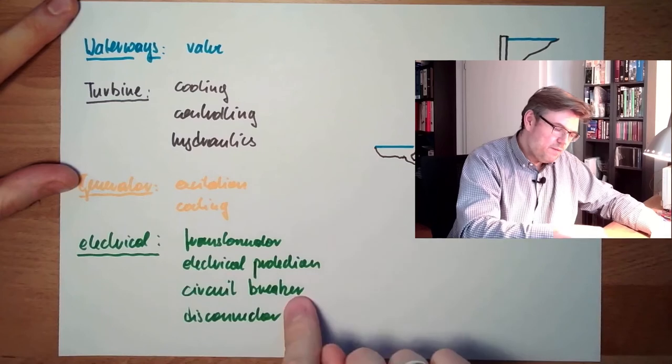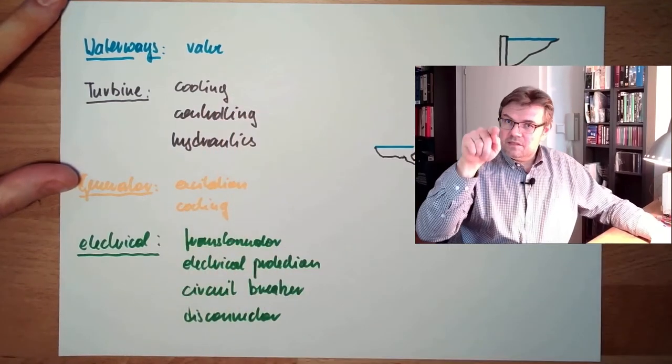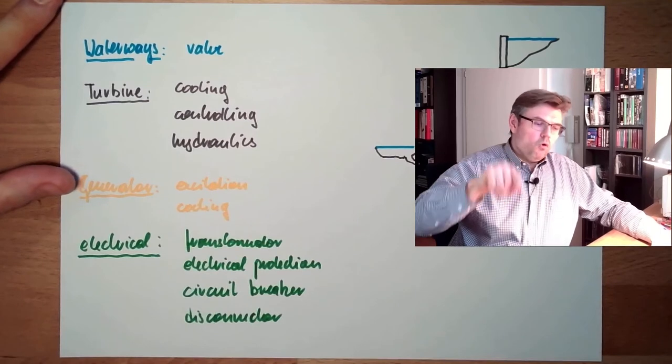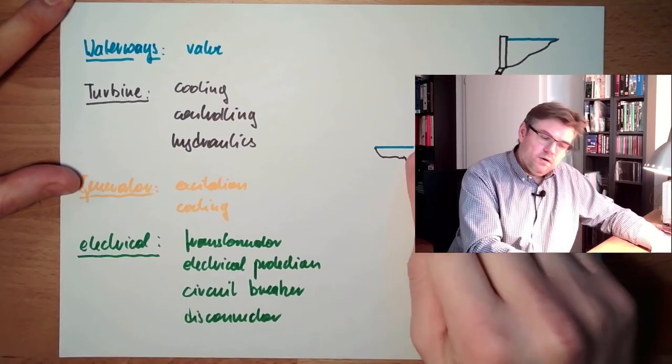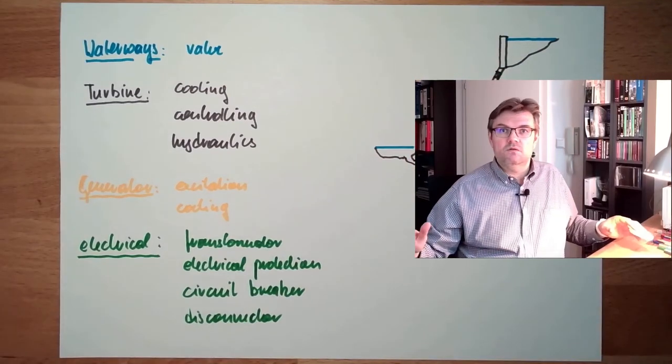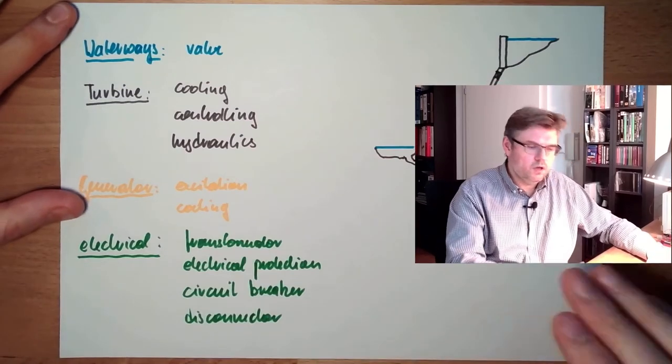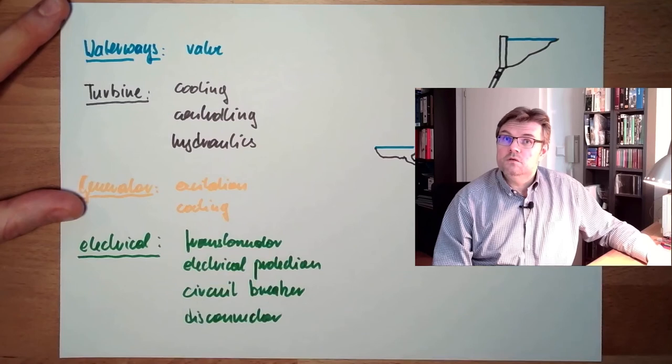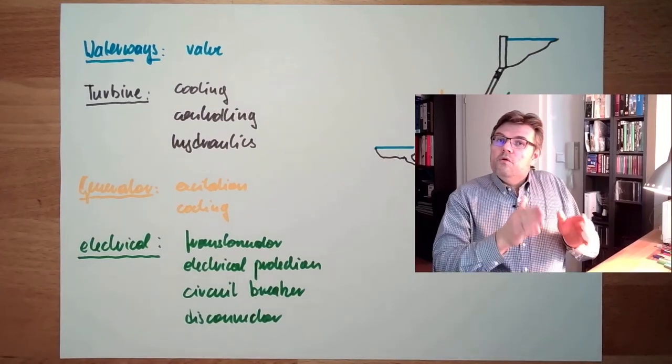That's then the next step. Circuit breaker on. Turbine controlling system gets the command to go to ground load, base load. Then it will simply open the water flow here and go to some defined base load, depending on turbine type and so on. Then we are in operation. That was the transition from standstill to operation.